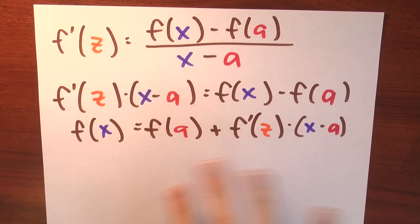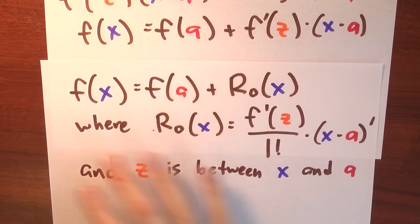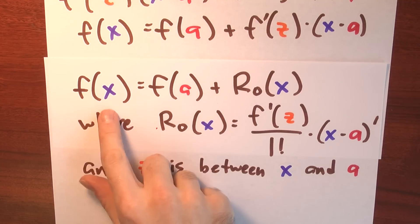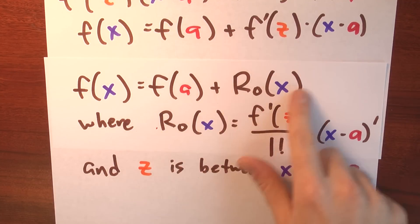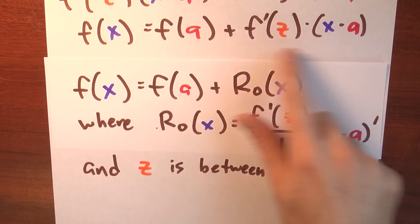Why would I want to write it that way? Well, I could write this in yet another way. I could write it like this. This is the same thing here, but just written a little bit differently. f of x equals f of a plus a remainder term, r sub 0 of x.